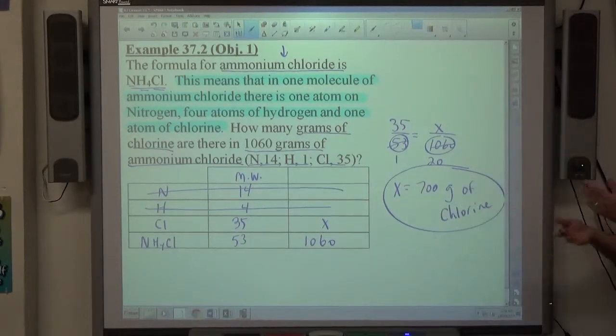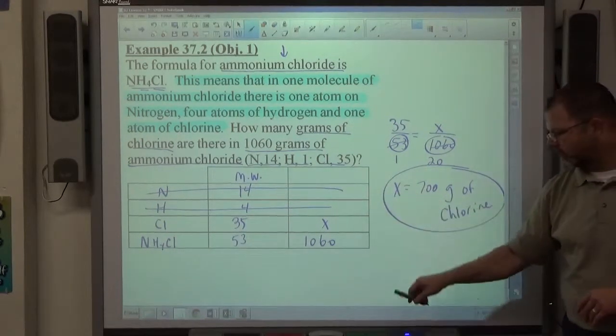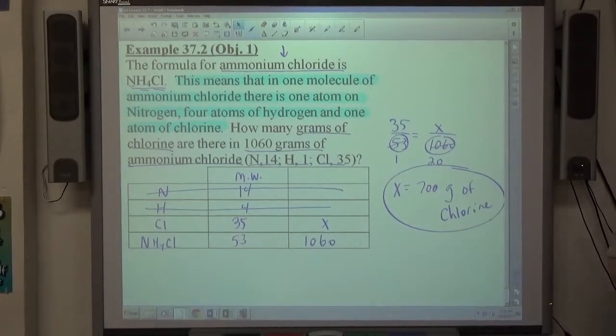Now, in this case, if they'd ask for more, like hydrogen or nitrogen, I'd have to actually do another proportion to get one of those before I can start subtracting from the total to get the one left over. So they usually ask for one at a time, though. They usually don't ask for everything.